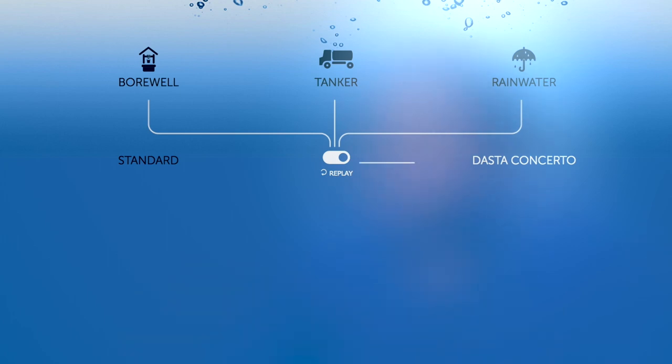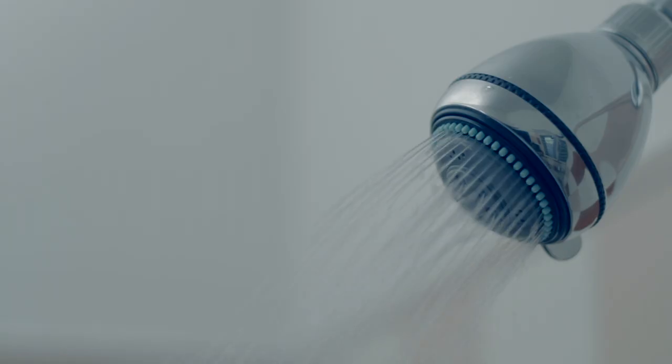Water from all three sources is first sent to a softening plant where the hard water is converted into soft water. This unifies the quality of water coming from different sources. It also increases the life of the pipes and the sanitary hardware by preventing it from scaling. Additionally, soft water is not harmful to human hair and skin.